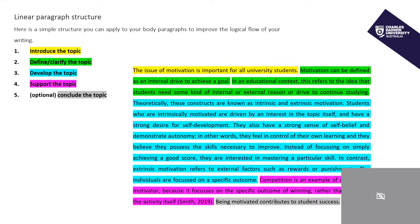Number two, define or clarify your topic — those are the green sentences. Number three, developing or elaborating on the topic — those are the blue sentences. Number four, as an example of a supporting sentence we put it in pink, but remember it does the same job. Developing the topic and supporting the topic is the same thing. And then finally, we have a sentence that concludes the topic.